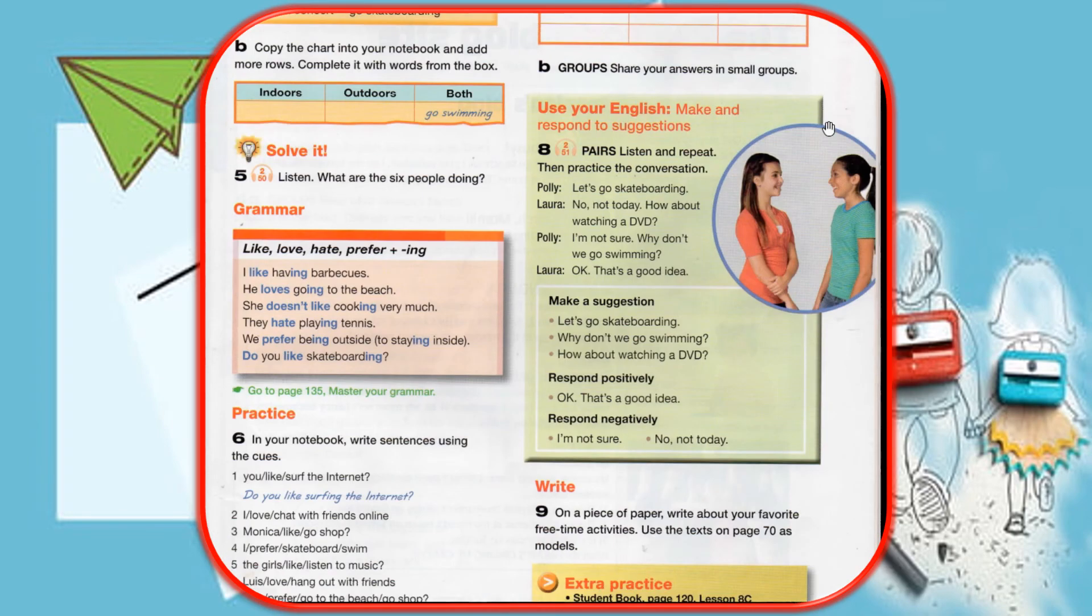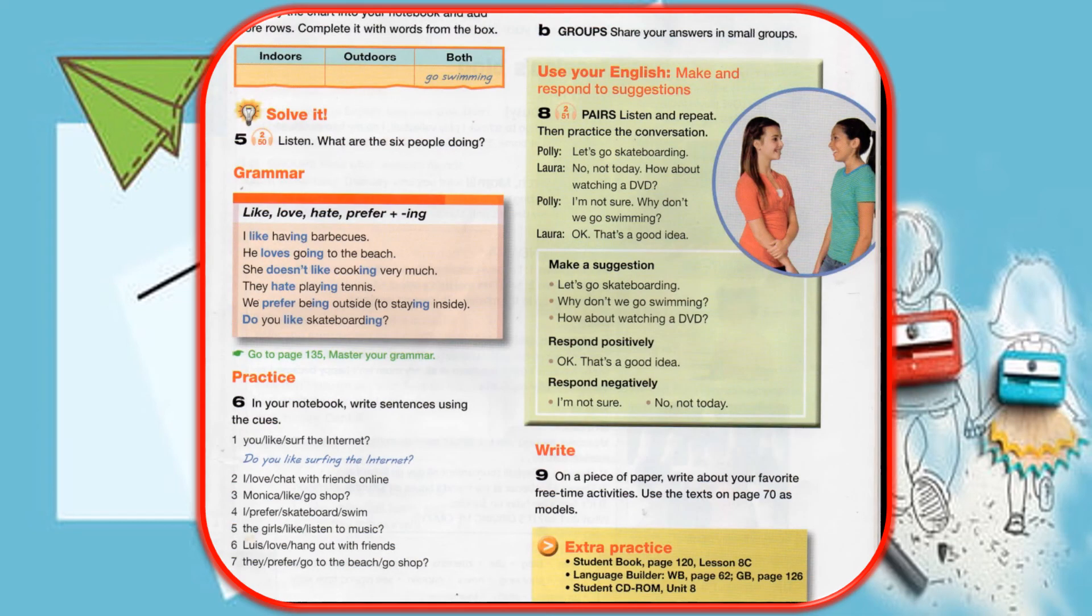Use your English. Here you have make and respond to suggestions. Listen and repeat, then practice the conversation. For example: Let's go skateboarding. No, not today. How about watching a DVD? I'm not sure. Why don't we go swimming? Okay, that's a good idea. So here you have make a suggestion: Let's go skateboarding, or why don't we go swimming, or how about watching a DVD.